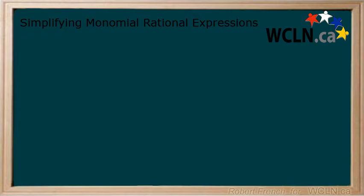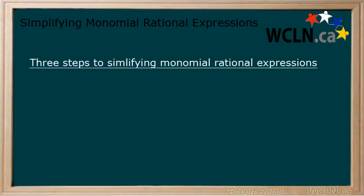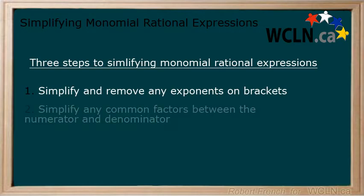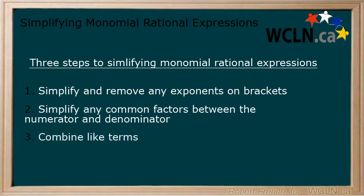When simplifying monomial rational expressions, there are three steps to follow. Step 1: Simplify and remove any exponents on brackets. Step 2: Simplify any common factors between the numerator and the denominator. Step 3: Combine like terms.